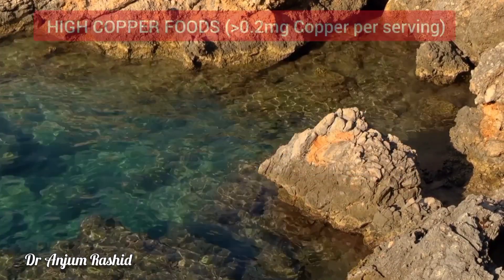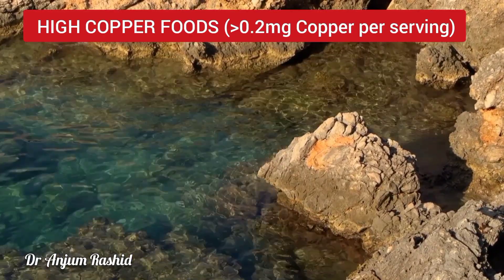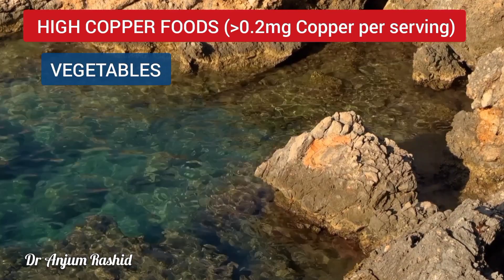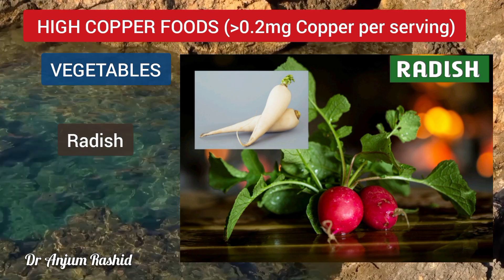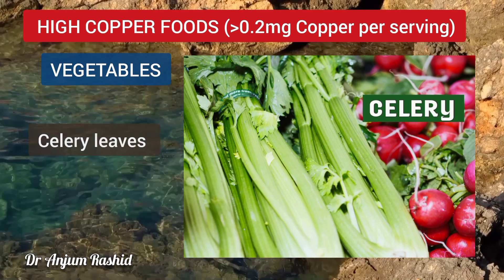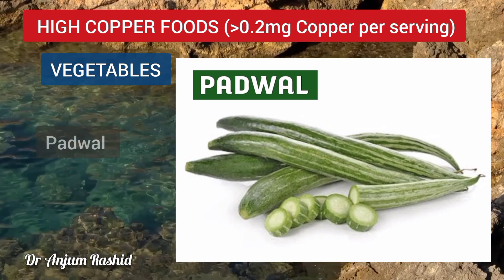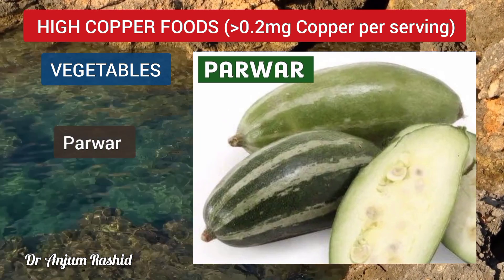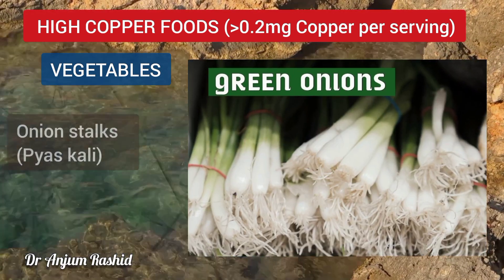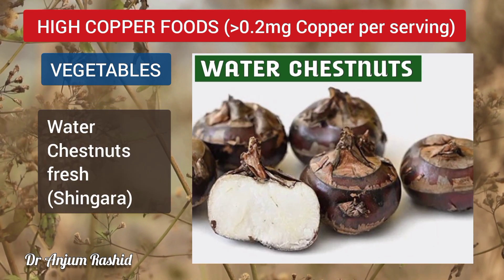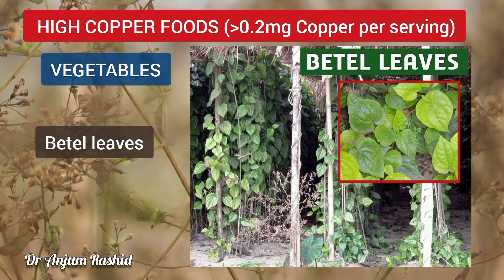High copper foods contain more than 0.2 milligrams of copper per serving. In vegetables, these include lima beans, radish, red or white beetroot, celery leaves, sweet potatoes, potatoes with skin, padwal, parwar, kamal kegdi, safaid kaddu, onion stalks, water chestnut fresh (also called shinghara), and beetle leaves.